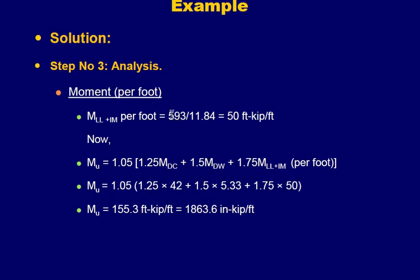Dividing the live load moment by the design lane width of 11.84 feet gives 50 kip·ft per ft. Now with all moments in the same units, applying the load factors and combining, we get a total factored bending moment of 1863.6 inch·kip. This is obtained by first computing in kip·ft and then multiplying by 12 to convert to inch·kip.